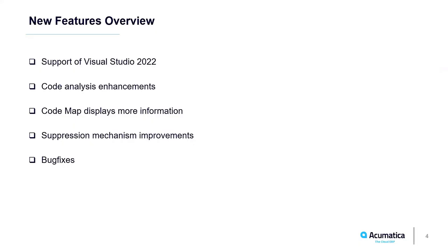Acuminator 3.0.0 has been released in April. The main feature is the support of Visual Studio 2022 in addition to two previous versions, 2017 and 2019. There are some enhancements in code analysis. Codemap now displays more information, and there are bug fixes and minor improvements in the error suppression mechanism.